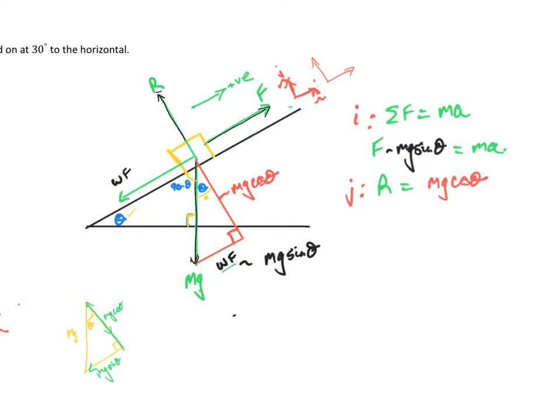mg cos theta is the force that's acting perpendicular, vertically opposite the reaction force. So this weight force will always be mg sine theta — we don't have to derive it every time, we just have to know that's the component of the weight force acting down the plane. mg cos theta is the component of the weight force acting perpendicular to the plane.